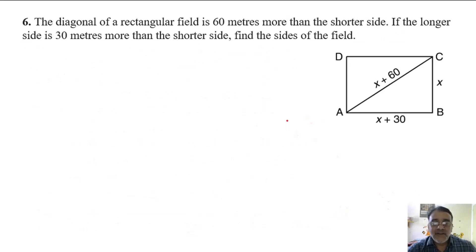The diagonal of a rectangular field is 60 meters more than the shorter side. Let the shorter side be x, so the diagonal will be x plus 60. If the longer side is 30 meters more than the shorter side, that is x plus 30, find the sides of the field.